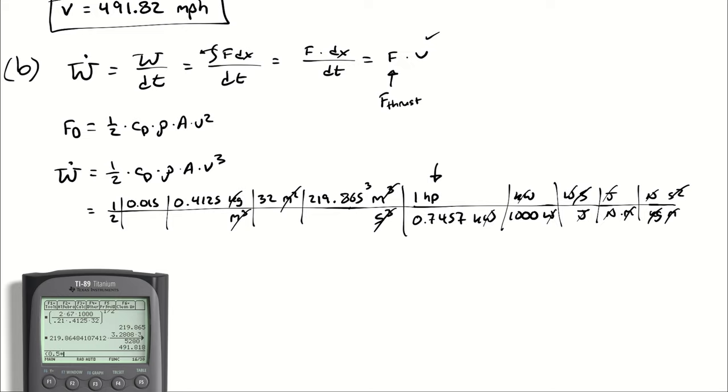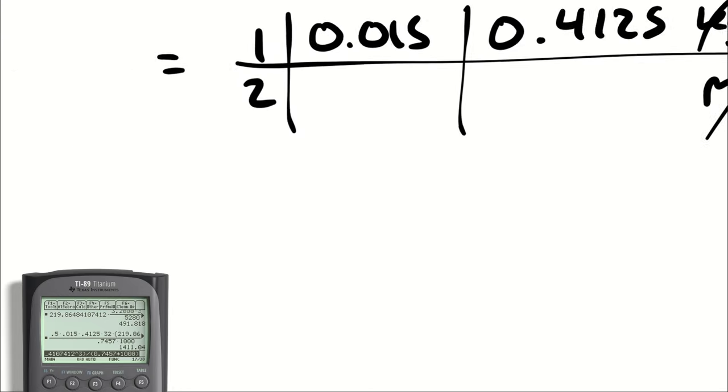0.5 times 0.015 times 0.4125 times 32 times 219.865 cubed, and let's grab that value for extra decimal places. Taking that entire quantity divided by 0.7457 times 1000, I get 1411 horsepower.